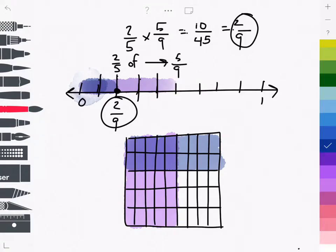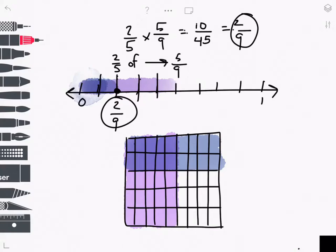My product is represented by the overlapping area here. I count 1, 2, 3, 4, 5, 6, 7, 8, 9, 10 cells out of a total of 45 cells.